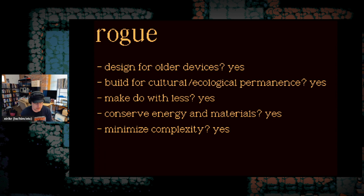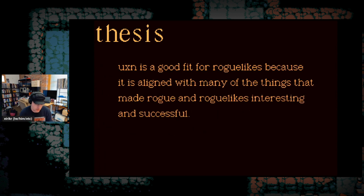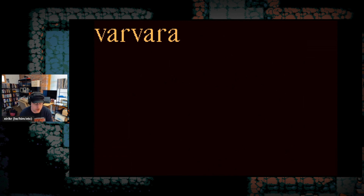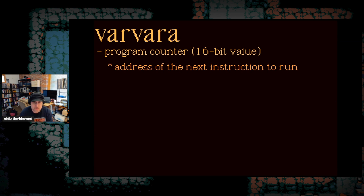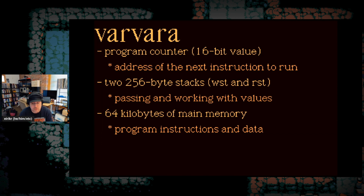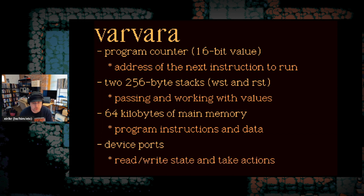I'm not claiming this is the only way to look at video games from a permacomputing angle, just that it's an interesting one to consider at Roguelike Celebration. My first thesis: UXN is a good fit for roguelikes because it's aligned with many of the things that made Rogue and roguelikes interesting and successful. It also happens to be a good fit for the state of software development and the world in 2024. I had hoped to show off my own roguelike demo, but life got in the way. Instead, I'll walk through how Varvara works. The virtual machine consists of a 16-bit program counter, two stacks for passing and working with values, 64 kilobytes of main memory where you put your program and all your data, and device ports for reading, writing, drawing, and playing sounds. That's really it — there's nothing else.